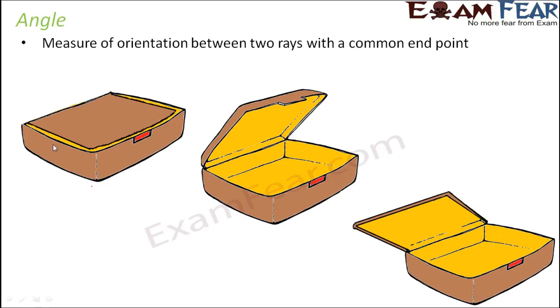For example, when the lunchbox is closed, in this case you would see that the orientation is like this. So if this is the base surface, now this surface is the base surface and this is the lid. So the angle between them is 0 degrees when it is closed.